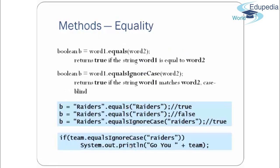There are also methods for equality: equals() and equalsIgnoreCase(). The equals() method compares values — word1.equals(word2) returns a boolean, returning true if the two strings are equal in value. equalsIgnoreCase() matches values while ignoring case differences. For example, "Raiders".equals("Raiders") is true, but "Raiders".equals("raiders") is false. Using equalsIgnoreCase() with the same comparison returns true.